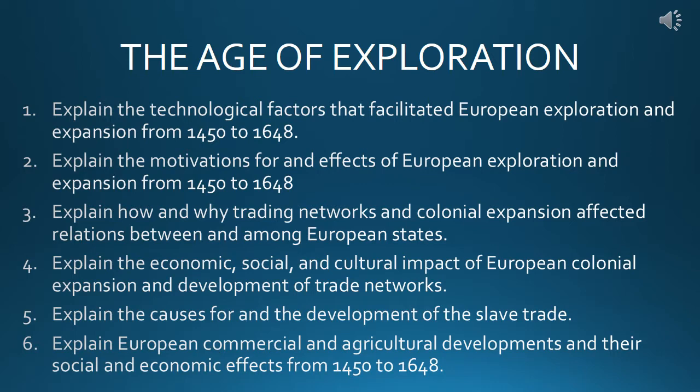One of the major themes of this AP European History course is the interaction that Europeans had with various parts of the world. Prior to 1450, Europeans had established interactions with Arab Muslim and Turkish Muslim peoples in North Africa, Southwest Asia, and Southwest Europe. Europeans had very limited direct interactions with peoples in India, Sub-Saharan Africa, and the Far East. However, after 1450, Europe's interactions with peoples from other parts of the world would increase immensely and really become a major element of Europe's rise to modernity.